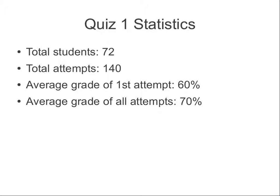Most people took multiple attempts — on average two attempts. This is good. The average grade on first attempt was 60% for most people. I don't think it's quite a reflection of your knowledge though, because we'll see later why some people got 60%. Maybe some may have copied — I don't know, we'll see.